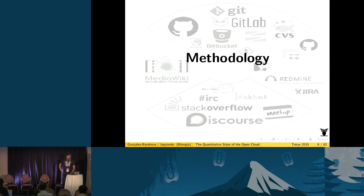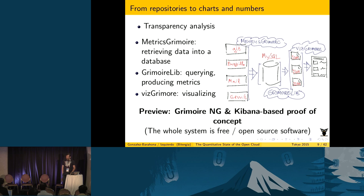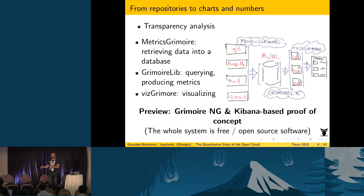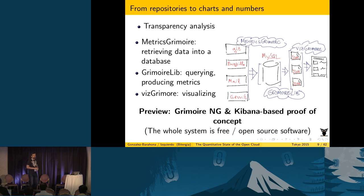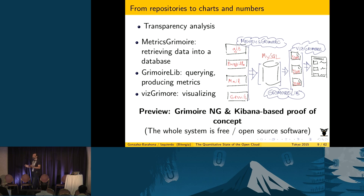Some words about the methodology. First, we run a transparency analysis on the projects we're going to analyze. Transparency means how transparent they are when you're trying to get data about how development happens. A company may develop open source software by developing everything inside the company and only releasing software, so all the information about how software is developed stays internal. So the first thing is to check whether a project, in addition to being open source software, is really an open development project — meaning they provide information about how they develop.